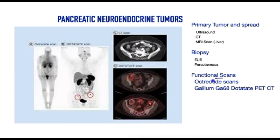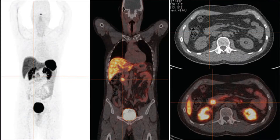Functional scans using molecules that bind to receptors on the tumours are invaluable. The older scan is called the octreotide scan, and the most recent generation are the gallium scans. Here is an example of a gallium scan where the tumour is detected via a fusion scan — a radionuclear whole-body image superimposed on a CT scan — giving an accurate location of both the primary and secondary tumour.